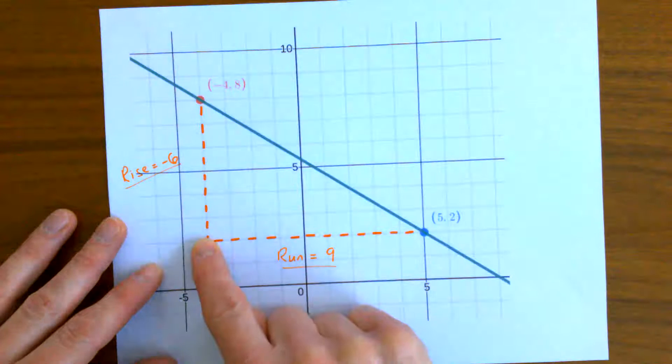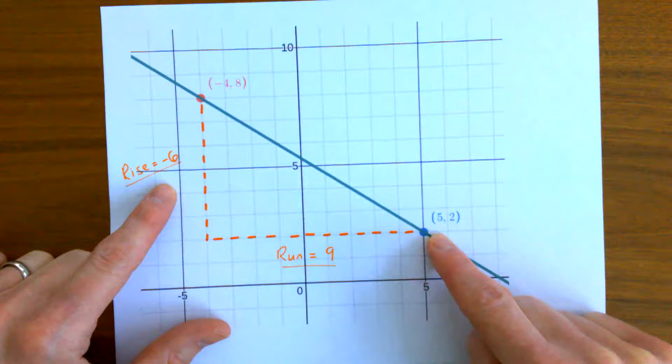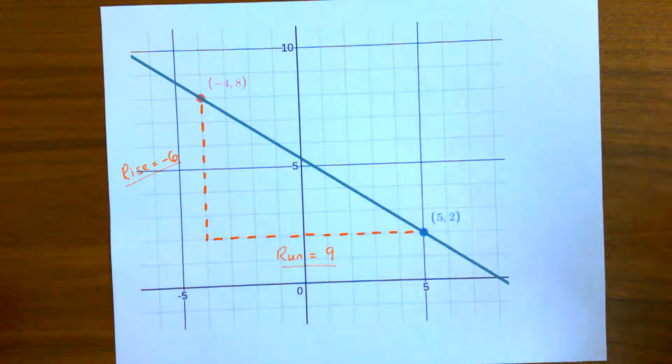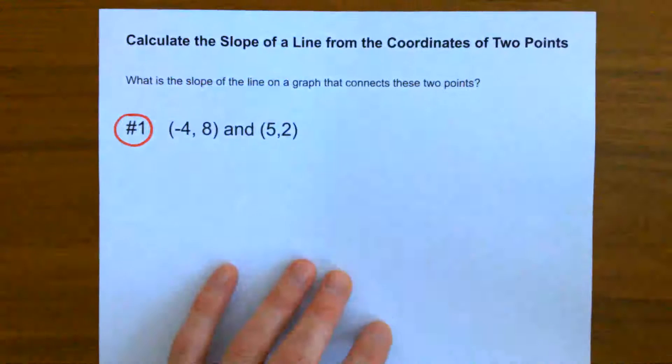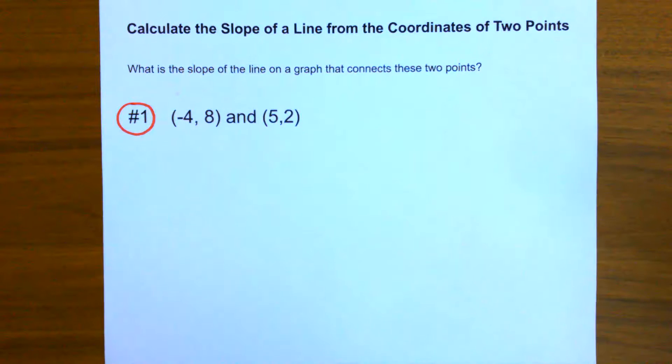And I can go down six, so my rise is negative six, and I go to the right nine places. So I can get my rise and my run that way to get my slope. But often reaching for graph paper is not convenient and there's a quicker way of getting there, and we don't even need graph paper at all.